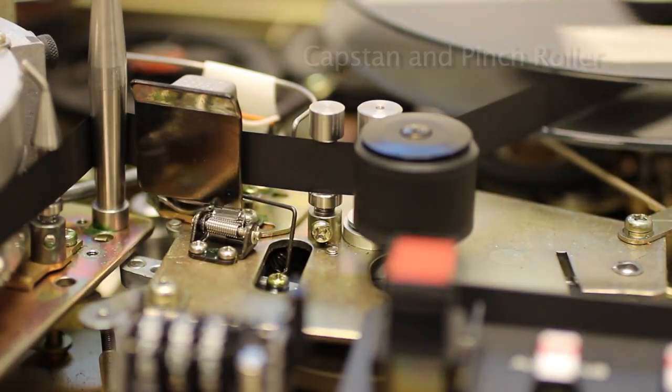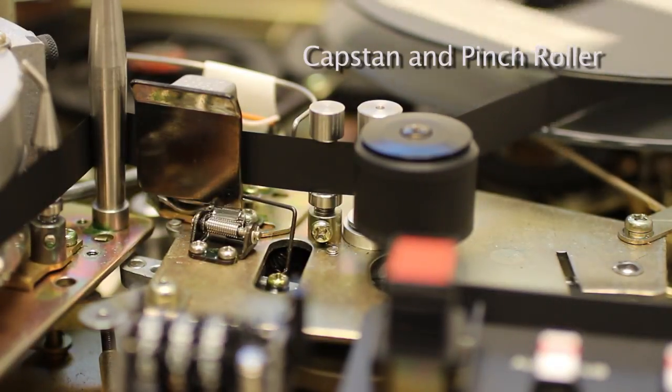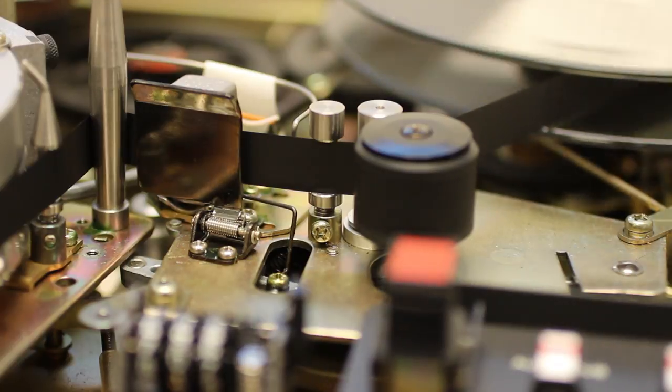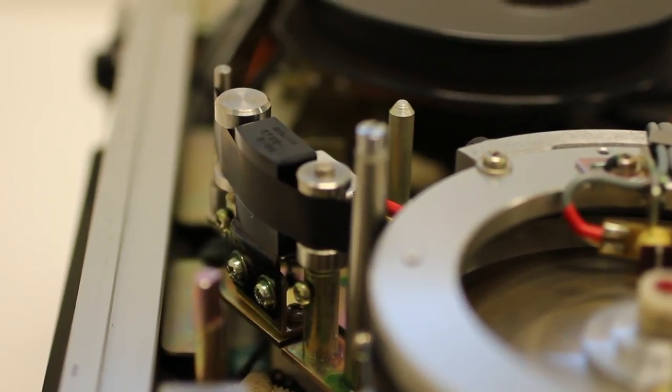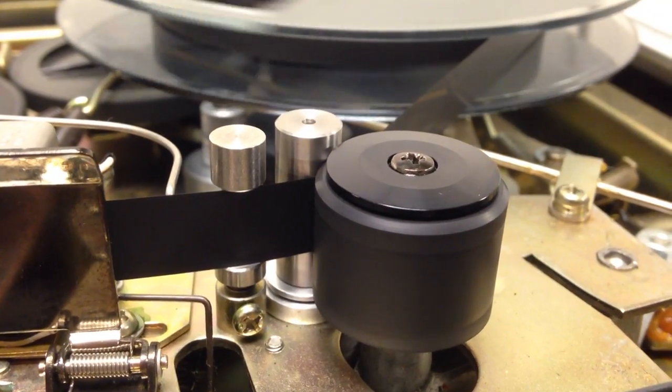The capstan has its own motor that works with the pinch roller and servo electronics, so that it can maintain the proper relationship between the speeds of both the heads and the tape as it rolls onto the take-up reel.